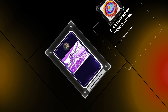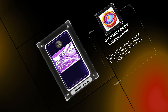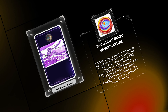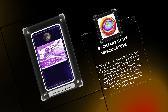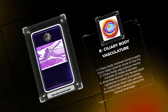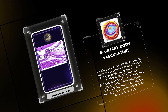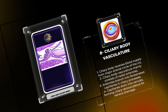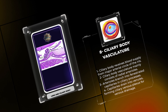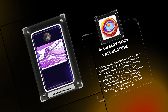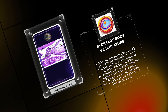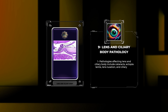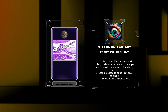Accommodation is the ability of the lens to change its shape, allowing for near and far vision. This process is regulated by the ciliary body and involves the contraction or relaxation of the ciliary muscle. When focusing on distant objects, the ciliary muscle relaxes, causing the tension on the lens to increase, resulting in a flatter shape. Conversely, for near vision, the ciliary muscle contracts, reducing tension on the lens, allowing it to adopt a more convex shape and increase its refractive power.